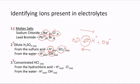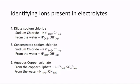In concentrated hydrochloric acid, we have H+ ions and Cl- ions from the acid, and again, since water is present, we also have H+ and OH- ions. In dilute sodium chloride, we have Na+ from the sodium chloride and Cl- ions, and again from the water we have H+ and OH-.